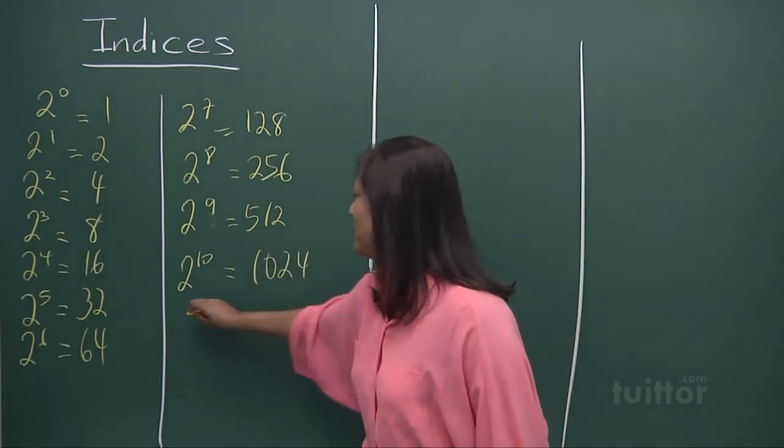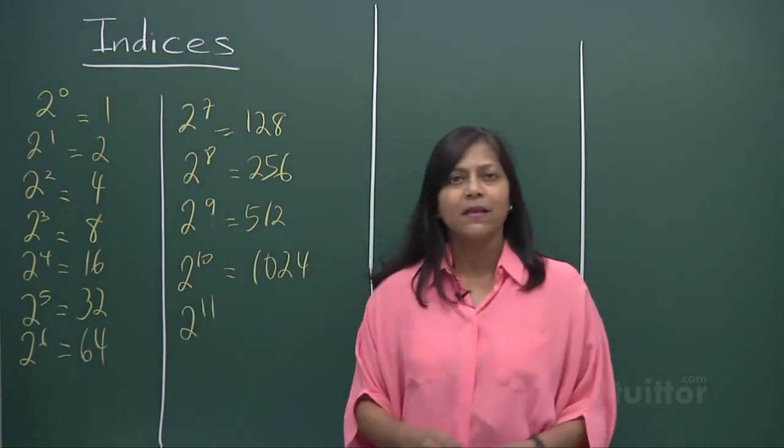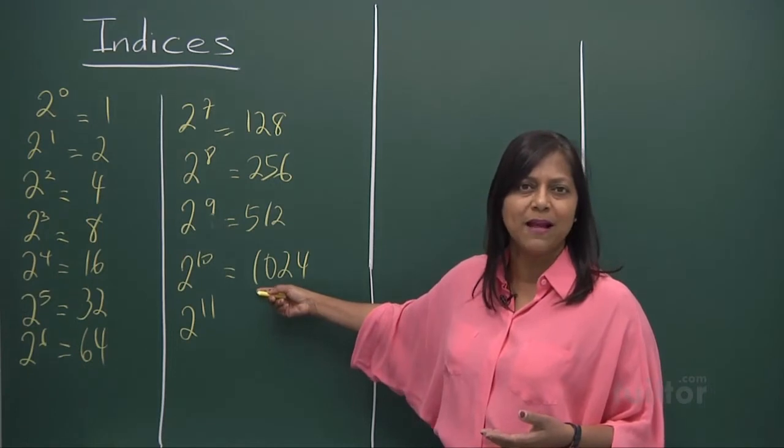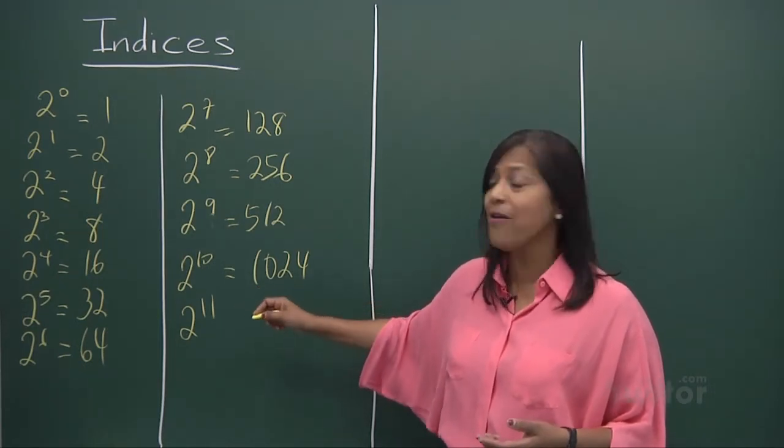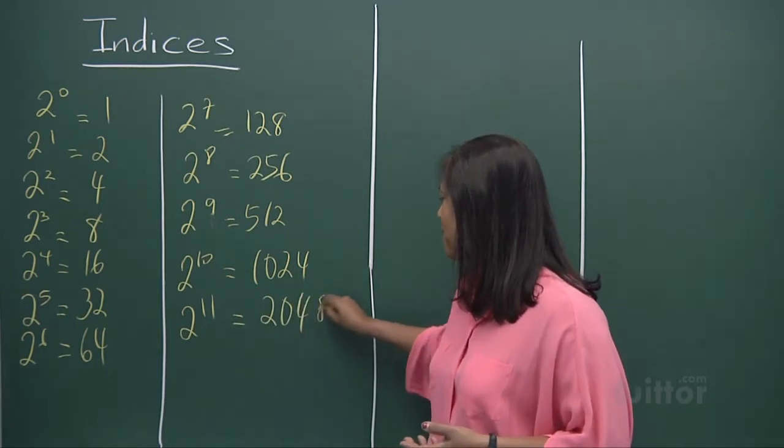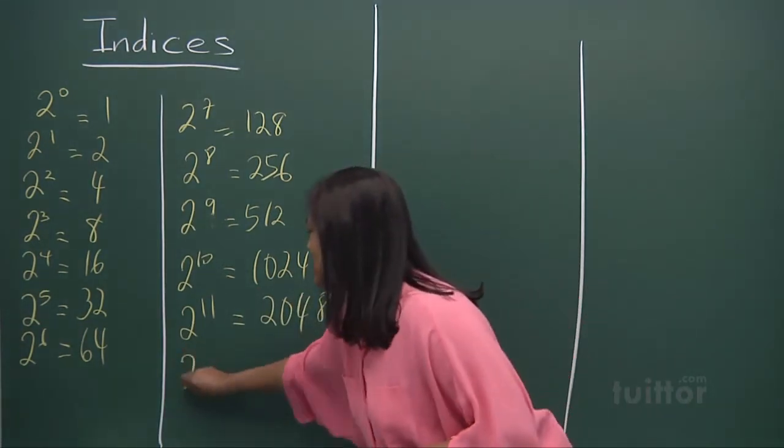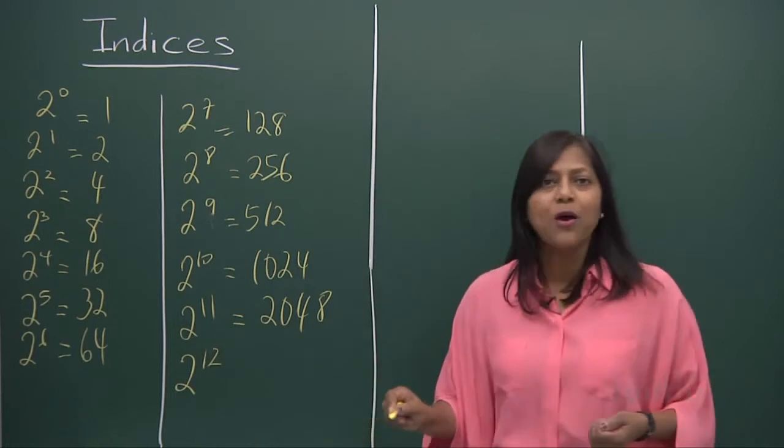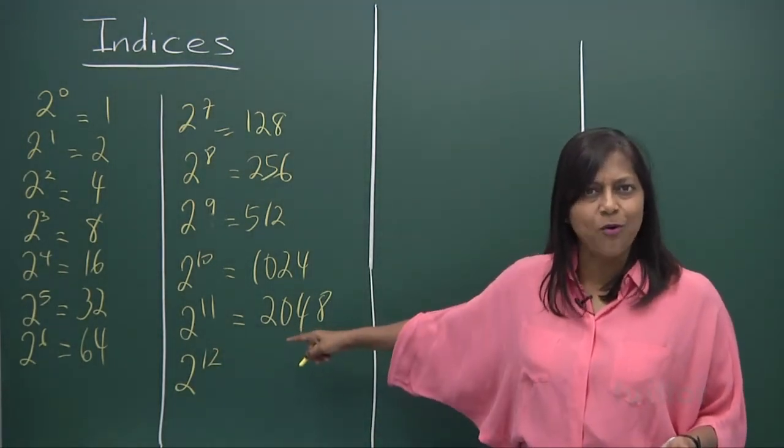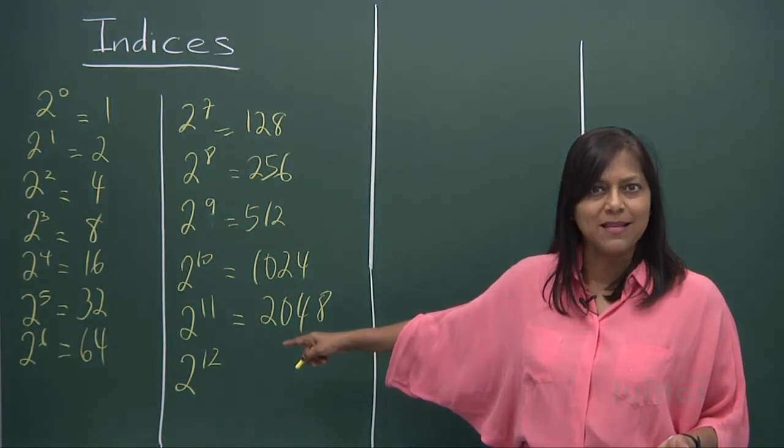And if you look at 2 to the power of 11. 2 to the power of 11 is just a double of that. A 1000 becomes 2000. 24 becomes 48. So you've got 2048. And 2 to the power of 12. 2000 becomes 4000. 48 and 48 becomes a 96.